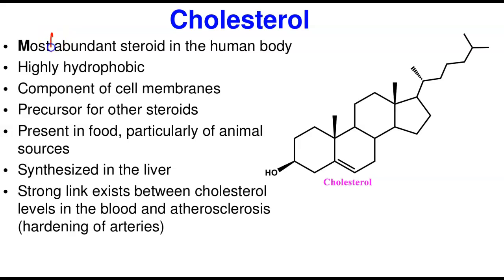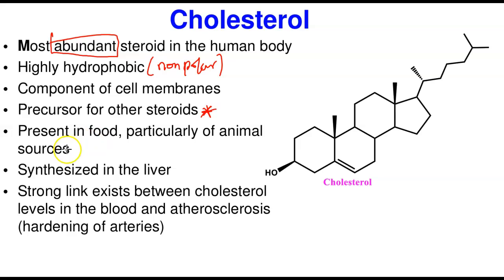Cholesterol is the most abundant steroid in the human body. It is highly hydrophobic — meaning it is nonpolar. It is a major component of the cell membrane that gives the cell rigidity. Cholesterol fits inside the tails of the phospholipid bilayer in the middle. It is a precursor of other steroids — you make other steroids from cholesterol. It is also present in food, particularly in animal sources, while plant sources have less cholesterol. Cholesterol is primarily synthesized in the liver.